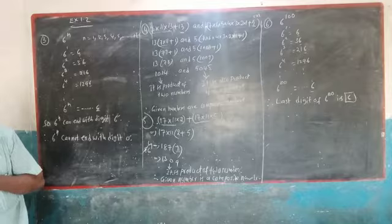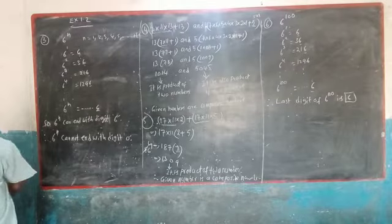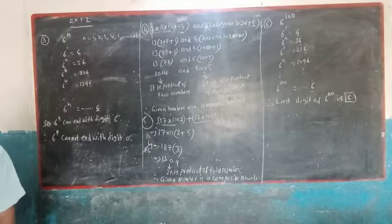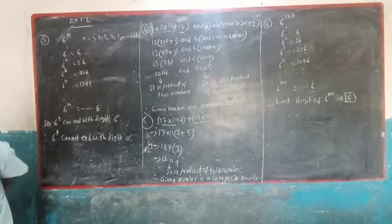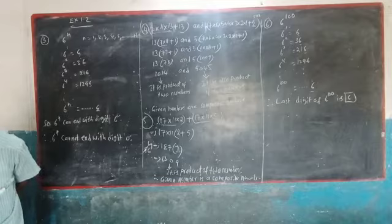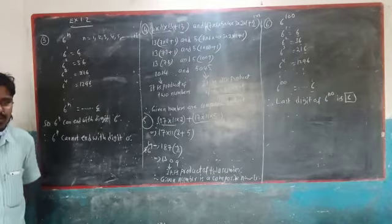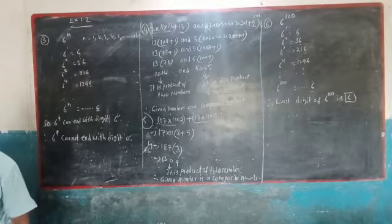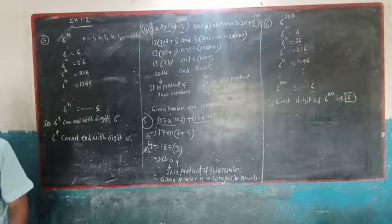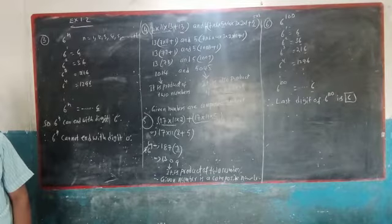Right. Now the fourth problem: explain why 7 into 11 into 13 plus 13, and 7 into 6 into 5 into 4 into 3 into 2 into 1 plus 5, are composite numbers. So what is a composite number? The product of two numbers gives a composite number.